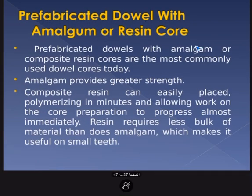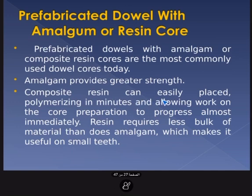The most commonly used dowel core system today is a pre-fabricated dowel with an amalgam or composite resin core. Amalgam provides greater strength, but composite resin can be placed and polymerized in minutes, allowing crown preparation to proceed almost immediately. Resin requires less bulk of material, making it useful for small teeth.